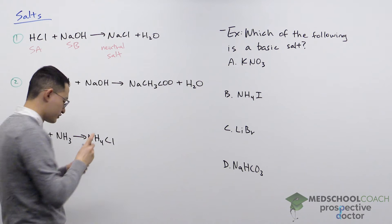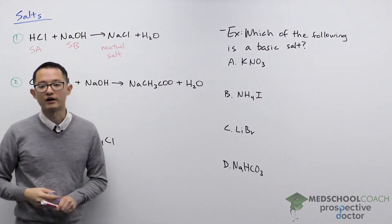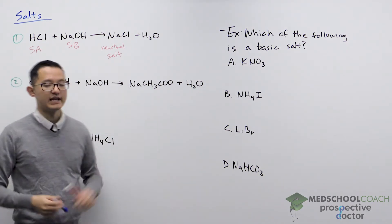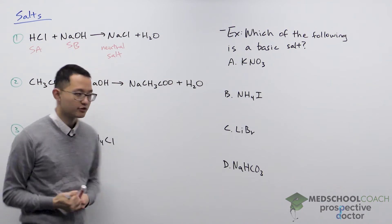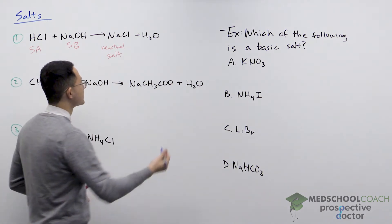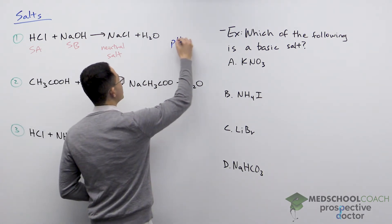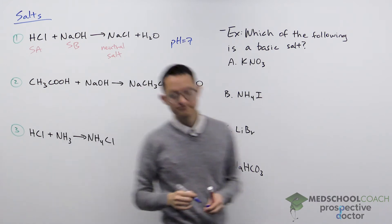As a neutral salt, if you were to take pure water and add some NaCl, the pH of the solution would be seven, which makes sense for why we call it a neutral salt.